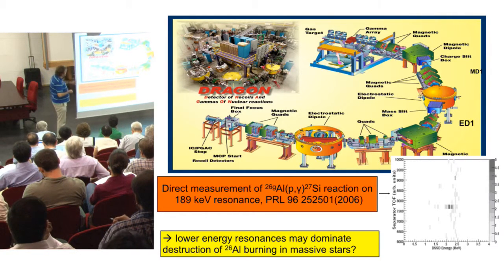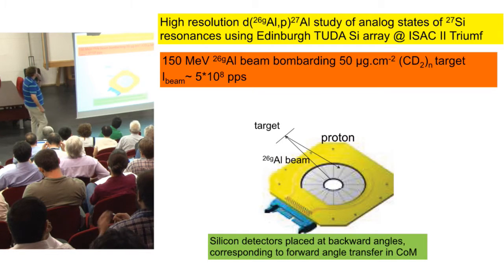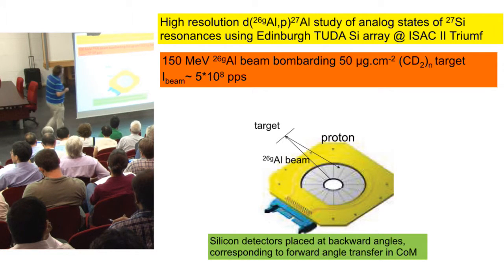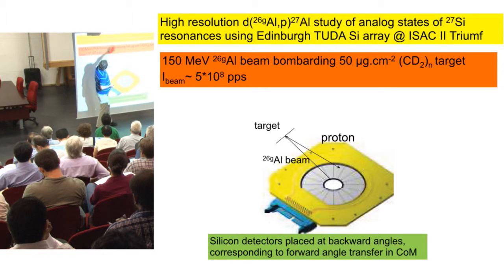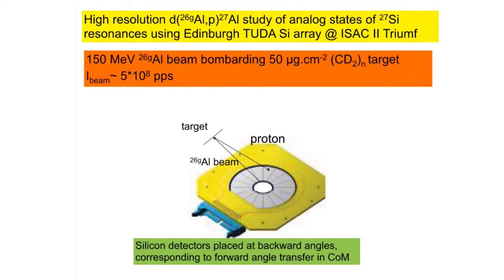We did an experiment at Argonne where we saw another state below that in energy, and we wanted to go and explore states lower than that. In this case we did the DP reaction, producing the analog nucleus. We're not looking at silicon-27, but we identified the analog states between aluminum-27 and silicon-27.